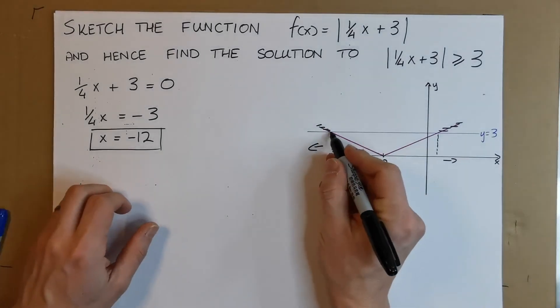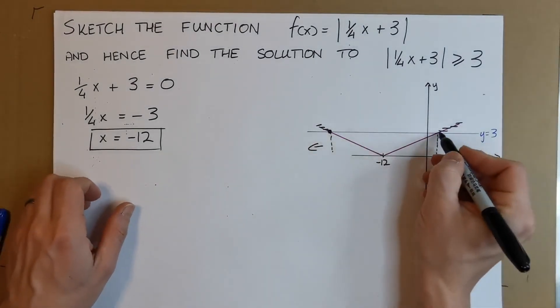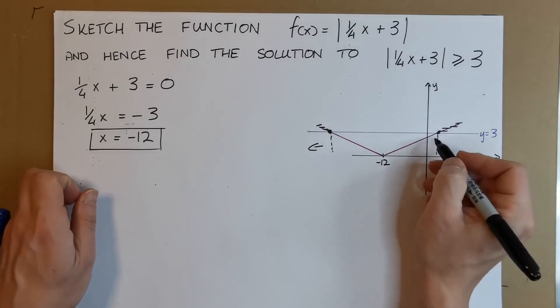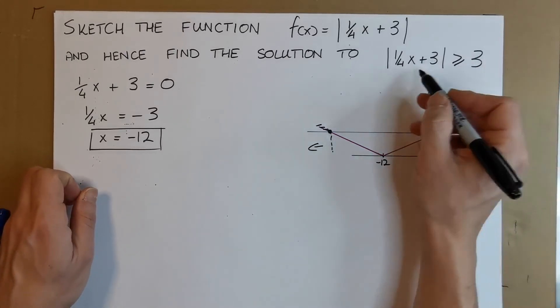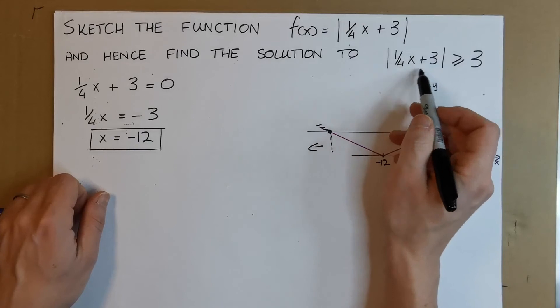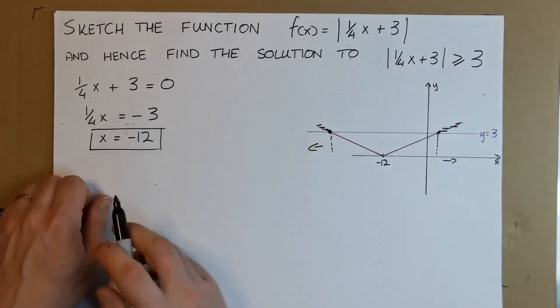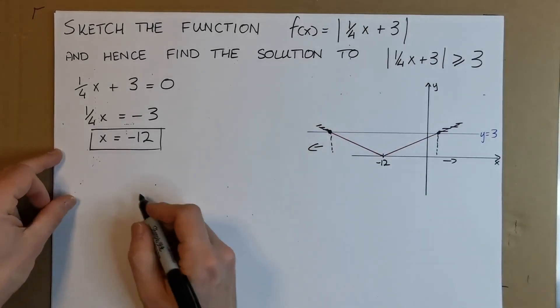What are these points called? These are the points of intersection. We want to know where |1/4x + 3| actually equals 3.